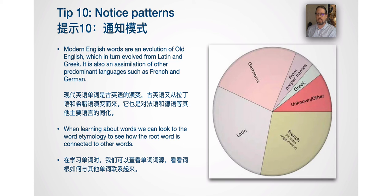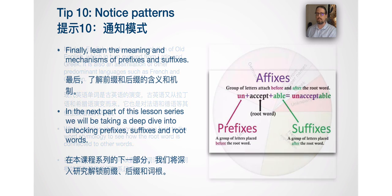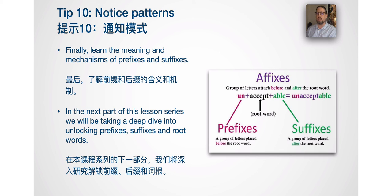Finally, tip number 10: notice patterns. Modern English words are an evolution of Old English, which in turn evolved from Latin and Greek, and is also an assimilation of other predominant languages such as French and German. When learning about words, we can look to word etymology to see how the root word is connected to other words. Learn the meanings and mechanisms of prefixes and suffixes — in the next part of this lesson series, we will be taking a deep dive into unlocking prefixes, suffixes, and root words.